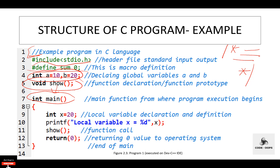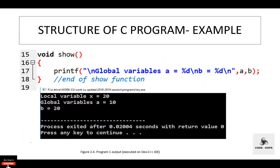Then the main function section: int is the return type and main is the function — this is where program execution begins. Inside the main function, we declare one local variable X and assign value 20 to it. Then using printf, we display the value of X. %d is the format specifier for an int type value. X is a local variable — local variables are those declared inside the main function. Then we call the show function, and when this function is called, control transfers to the definition of the show function.